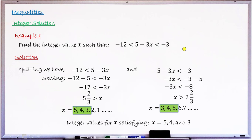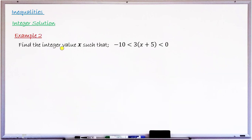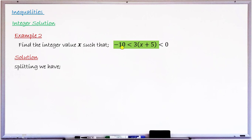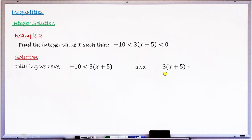Let's take one more example. Example number 2 says: find the integer values of x such that minus 10 is less than 3 times (x plus 5), and 3 times (x plus 5) is less than 0. Splitting into two simple inequalities: minus 10 less than 3(x plus 5), and 3(x plus 5) less than 0.